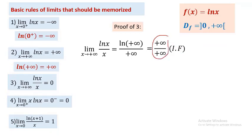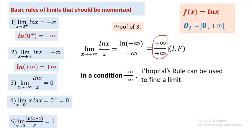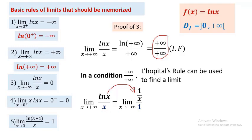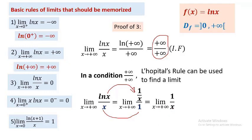Since we have infinity over infinity, we can apply L'Hôpital's rule. The derivative of ln x is 1/x, and the derivative of x is 1. So we get (1/x) ÷ 1 = 1/x. Substituting x by +∞ gives 1/∞ = 0. So this property is verified: lim(ln x / x) as x→+∞ = 0.